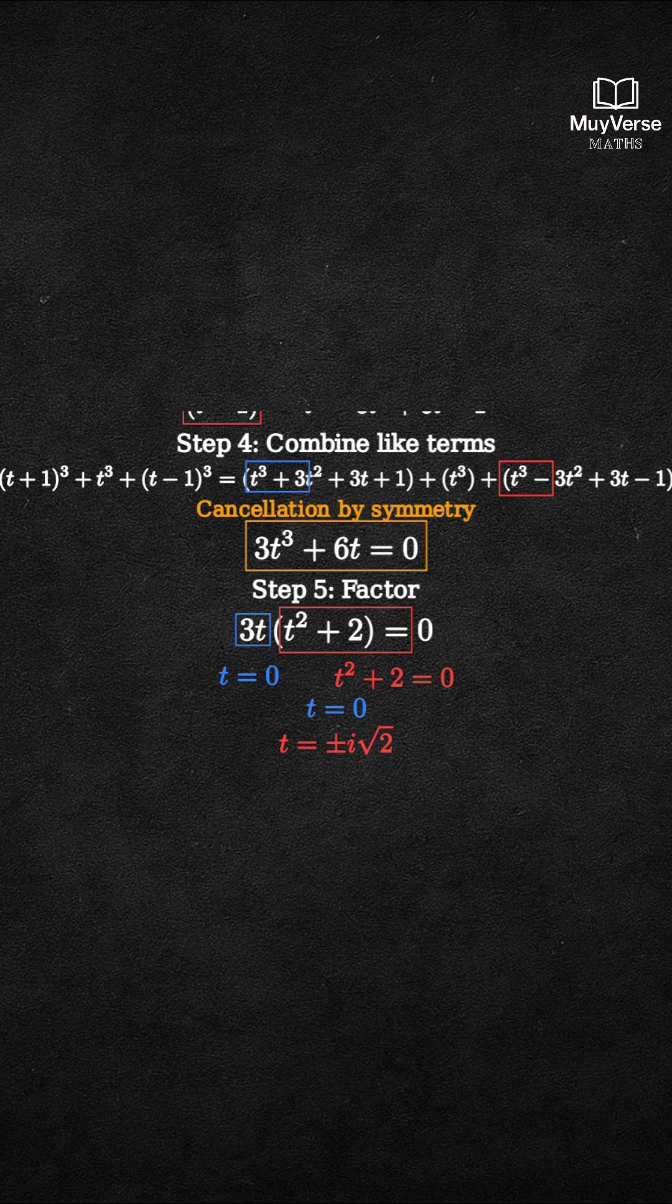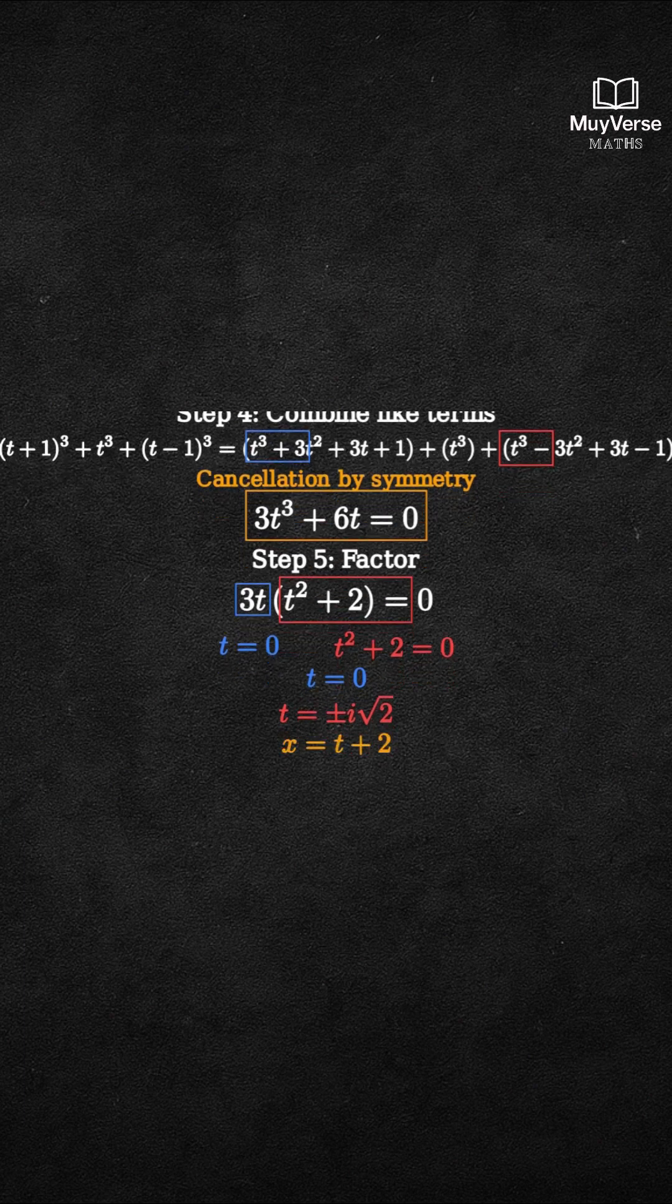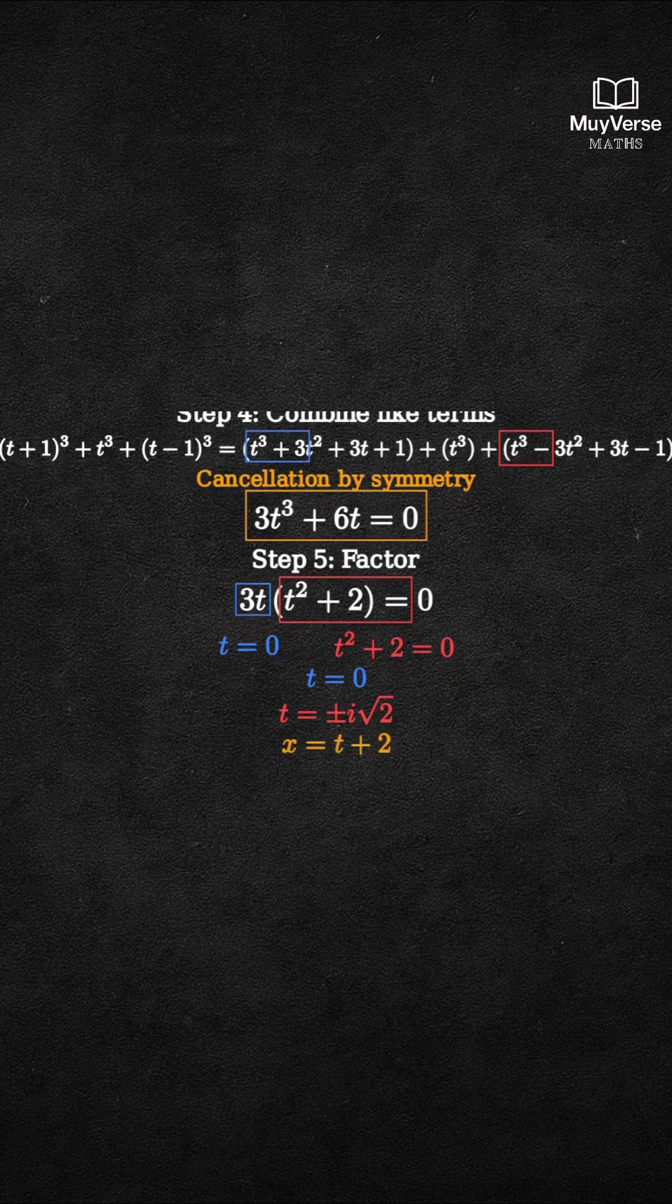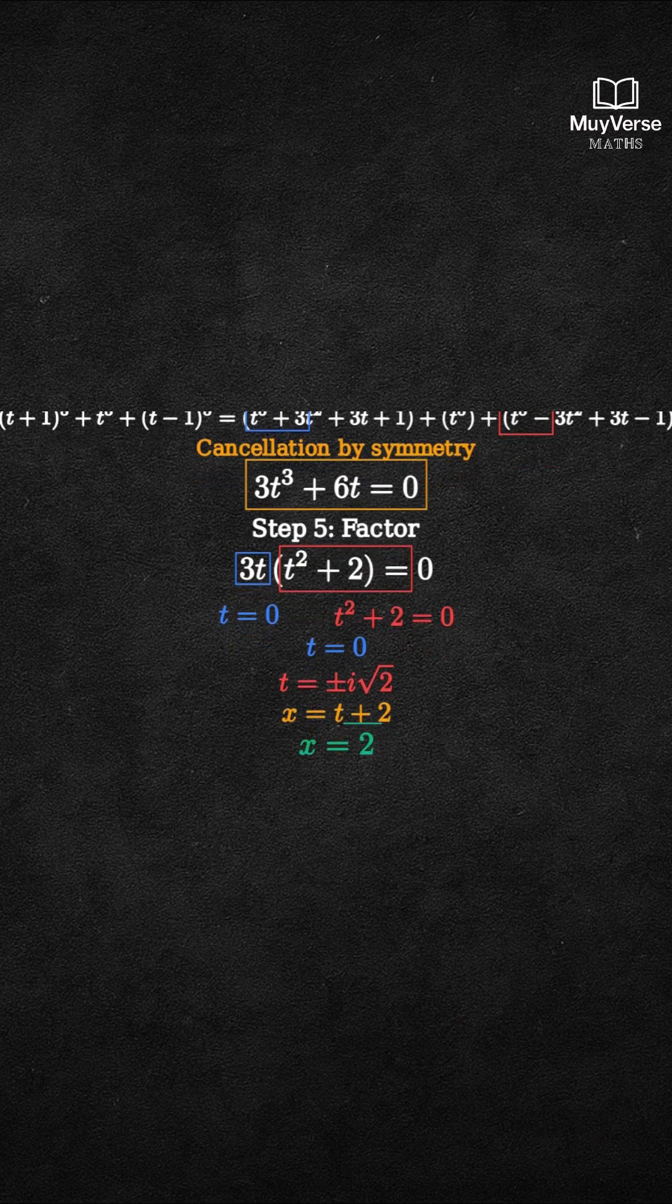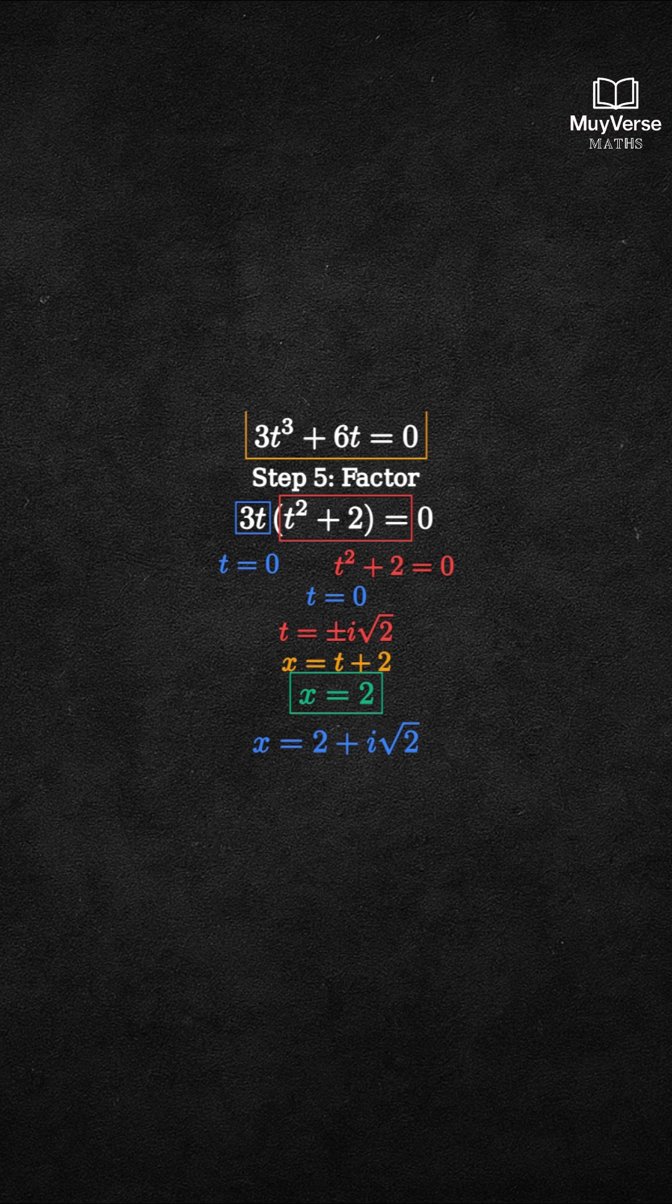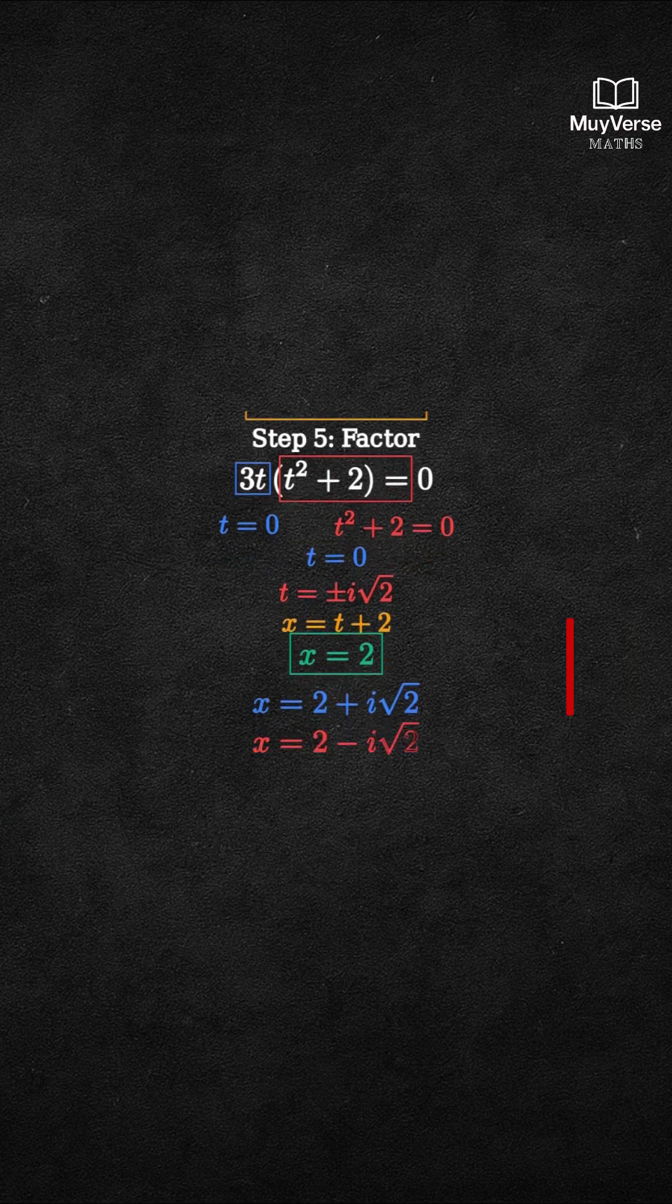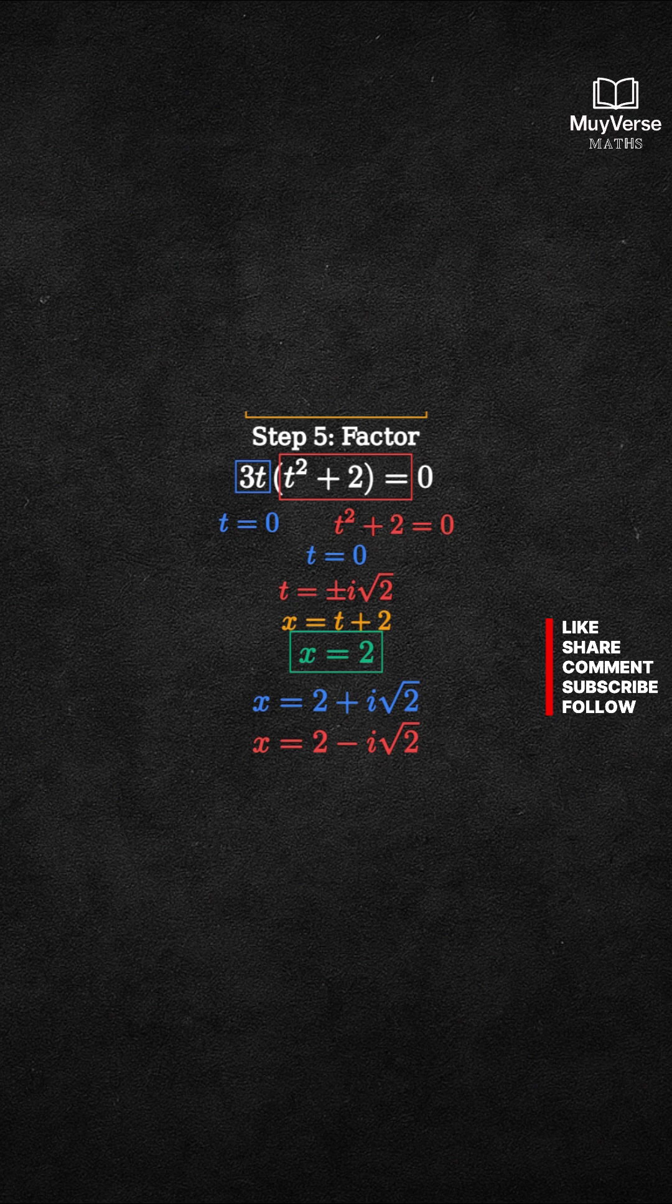Now convert back to x using x equals t plus 2. Therefore, the three solutions are x equals 2, x equals 2 plus i times square root of 2, and x equals 2 minus i times square root of 2. Only x equals 2 is real. The other two form a complex conjugate pair.